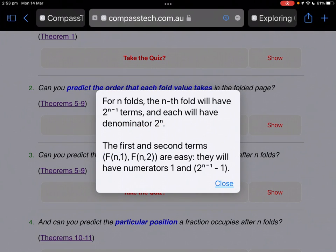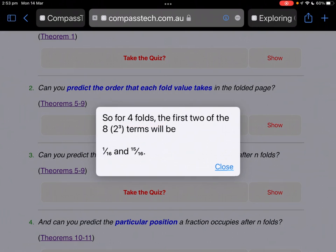Set the number of folds as 4. The nth fold will have 2^(n-1) terms. And each will have denominator 2^n. So for instance, we've already seen 3 folds. You have 8. Well, it divides the page into 8 parts. But at the fold, there are only 4. The first and second terms are easy. We'll call them fold number 1 for n folds and F(n,2). They will have numerators 1 and 2^(n-1) - 1. What does that mean? So for 4 folds, the first two of the 8 terms will be 1/16 and 15/16.